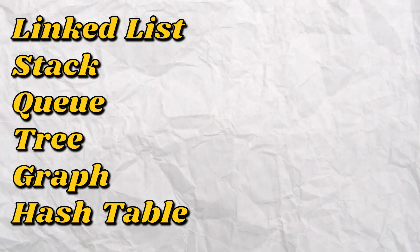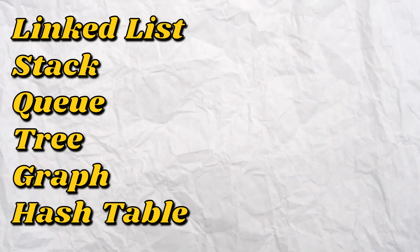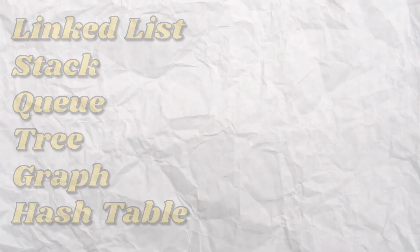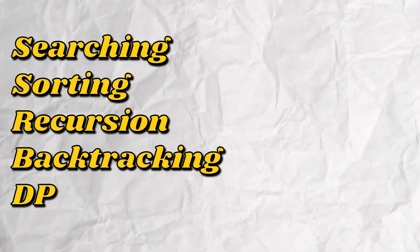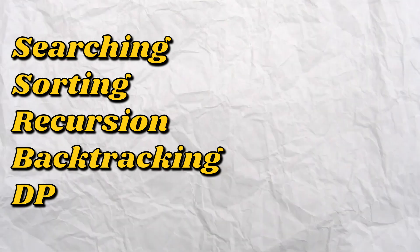On the other hand, if you are applying for big MNCs, you should know all the built-in data structures — array, object, string, set, map — along with custom data structures like linked list, stack, queues, trees, graph, and hash table. You should also know all the algorithms mentioned earlier: searching algorithms, sorting algorithms, recursion, backtracking, basic ops, dynamic programming, and greedy algorithms.